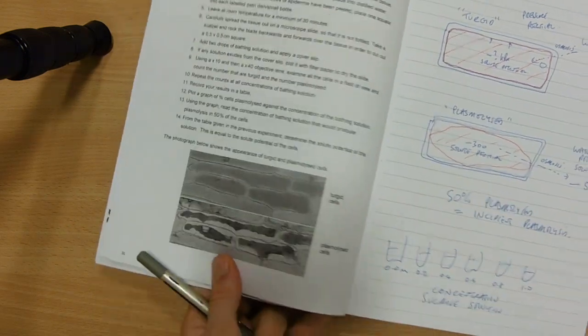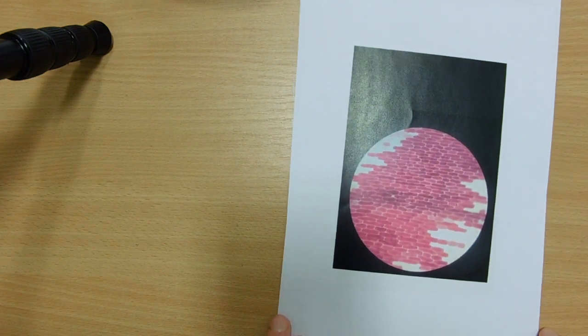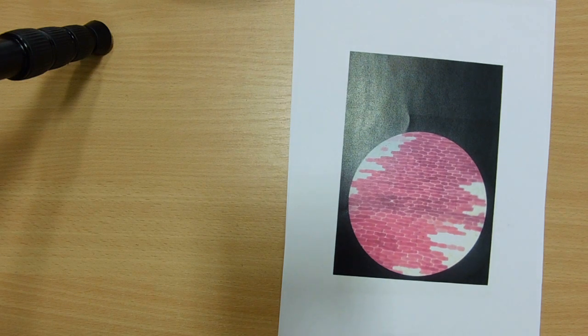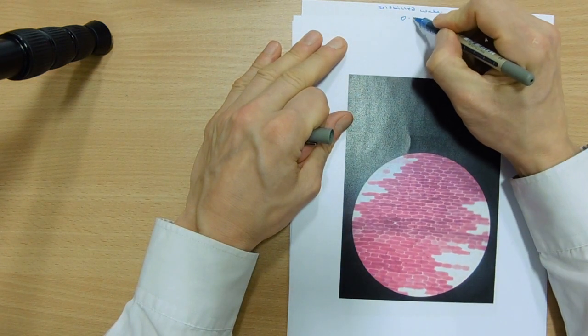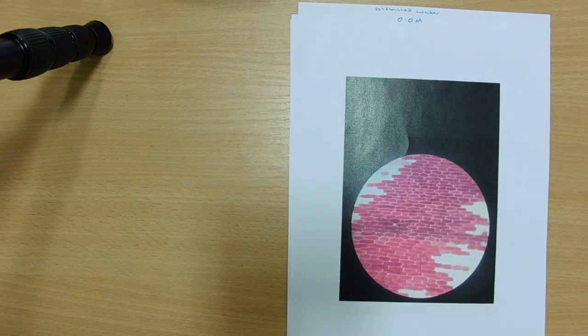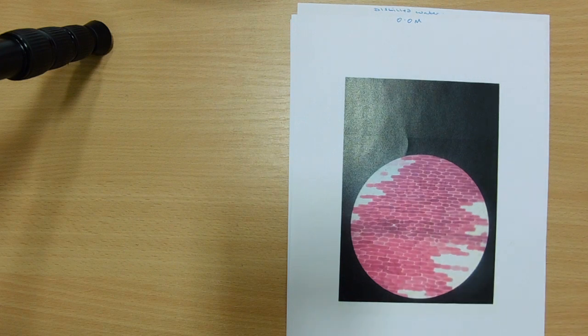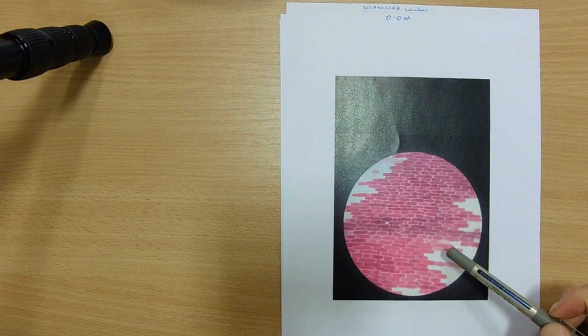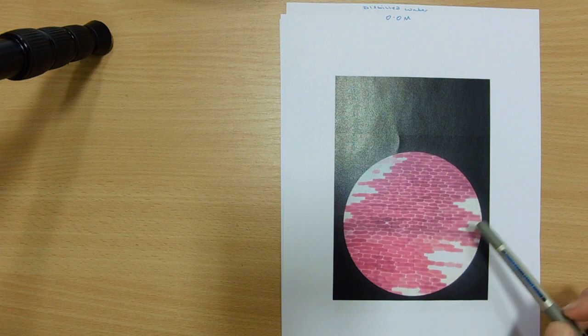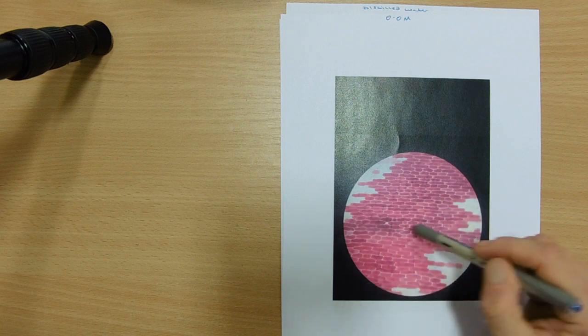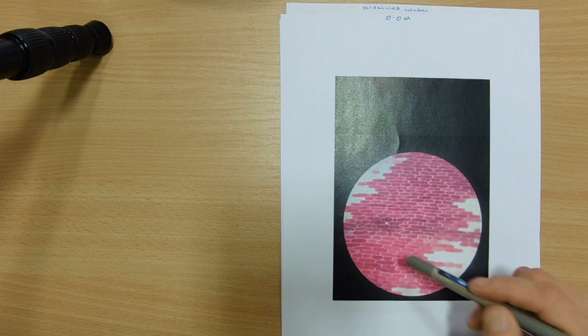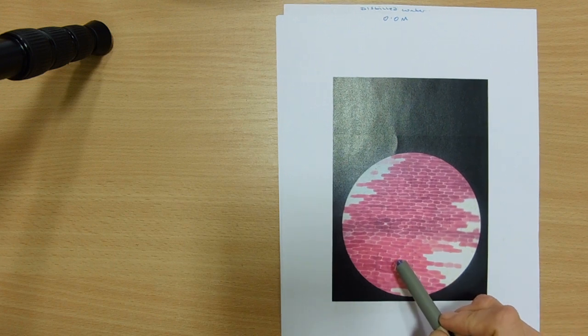And so what we do next is, if I get rid of that and show you our first view down the microscope. So this is our distilled water, 0.0 molar sucrose. And we look down there and, to me, they all look turgid. I can't find any that show any plasmolysis at all. So we'd count those or a section of those. I think for the results that we used, I counted a quarter of the view, which is roughly about 30 cells. And we decided that all 30 were turgid. So our percentage plasmolyzed is 0%.